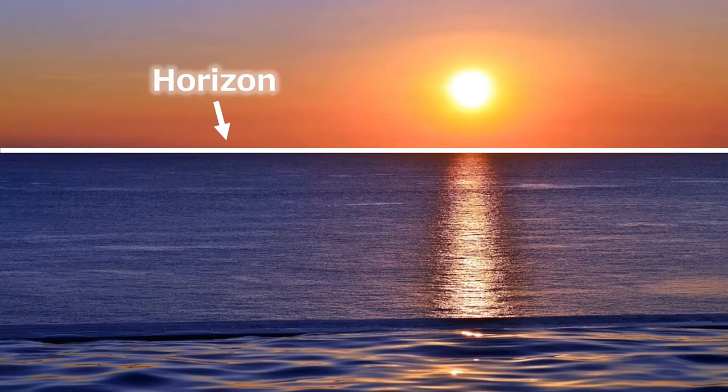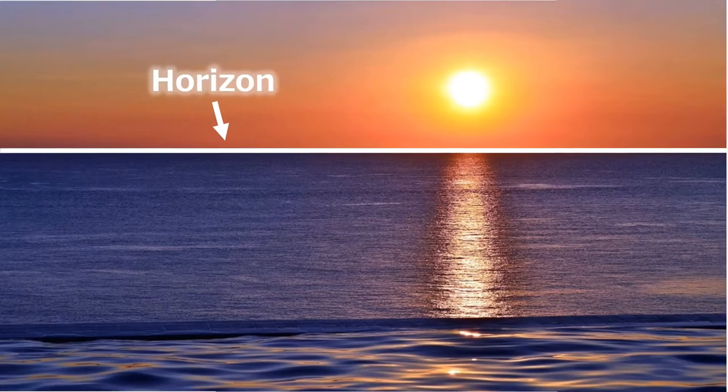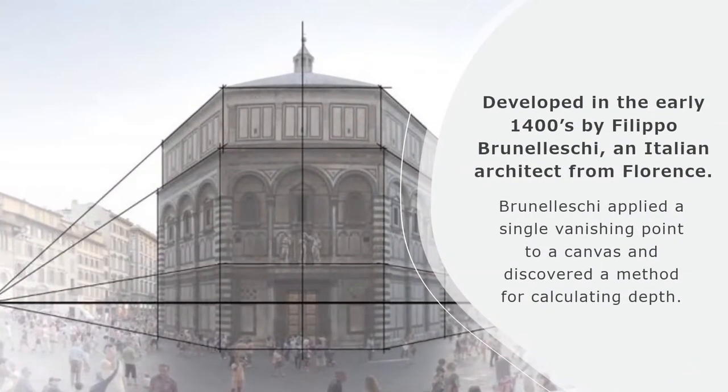Linear perspective was first discovered in the early 1400s by an architect named Filippo Brunelleschi. He was the architect that designed the cathedral in Florence, Italy.